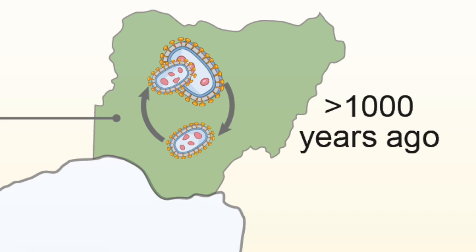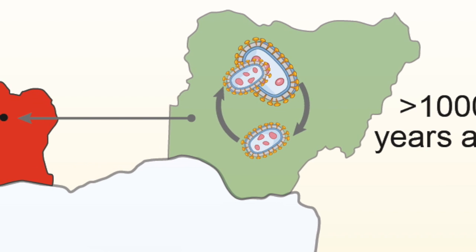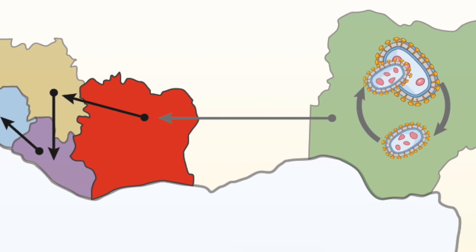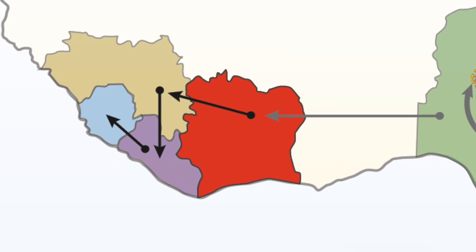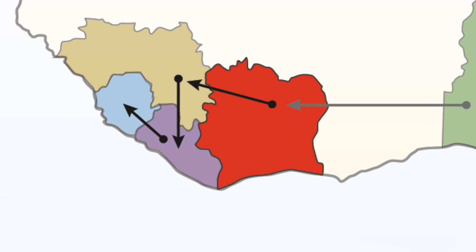The main finding is that the virus appears to have originated at least a thousand years ago in modern-day Nigeria, and then maybe a couple of hundred years ago spread across West Africa — going from Nigeria into other countries, primarily Guinea, Liberia, and Sierra Leone.